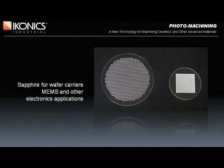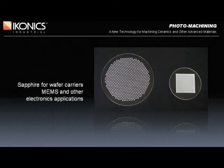Sapphire is an extremely tough and durable material and is now being used in several electronics applications. The examples shown here represent through holes in a 4-inch wafer and a 200-micron deep cavity in a 2-inch wafer. Photo machining is an ideal way to create holes, cavities, and other features where most conventional machining techniques would fail. A popular application is to use sapphire with holes to mount glass wafers, which can then be ground and polished ultra-thin for use in MEMS applications.